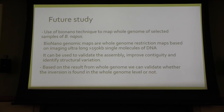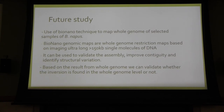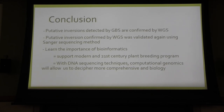For a future study, bio-nanotechnics will be used to map the genome of selected Brassica napus samples. Bio-nanotechnics is a technique that creates a whole genome restriction map to validate assembly or identify structural variation. Based on these results, we may be able to validate whether the inversion exists at the whole genome level. In conclusion, the putative inversion was detected by GBS, confirmed by WGS, and validated using Sanger sequencing. I also learned important bioinformatics techniques useful for modern 21st-century breeding programs.